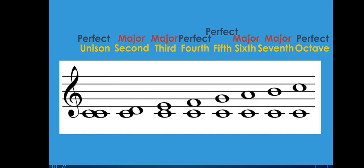Make sure you keep in mind that we are using the major scale. In the major scale, unison, fourth, fifth, and octave are called perfect — so we have perfect unison, perfect fourth, perfect fifth, and perfect octave. The rest are called major: major second, major third, major sixth, and finally major seventh.